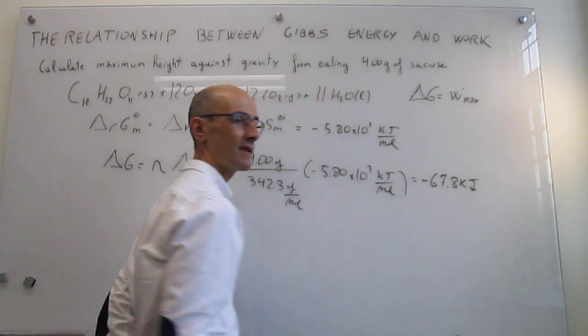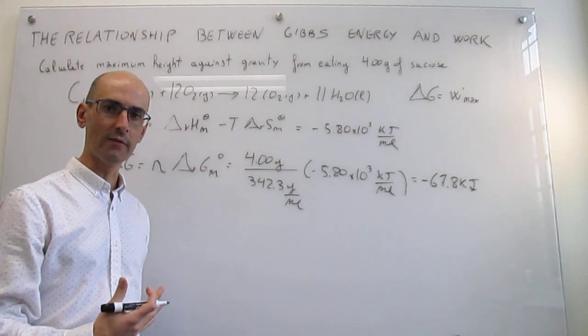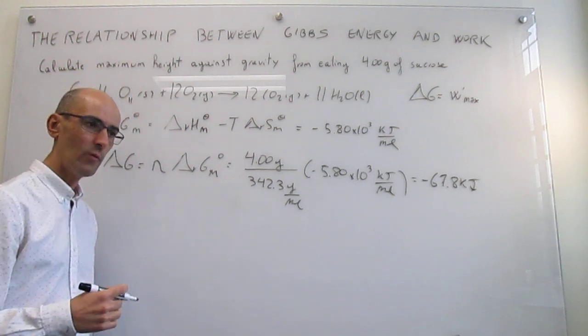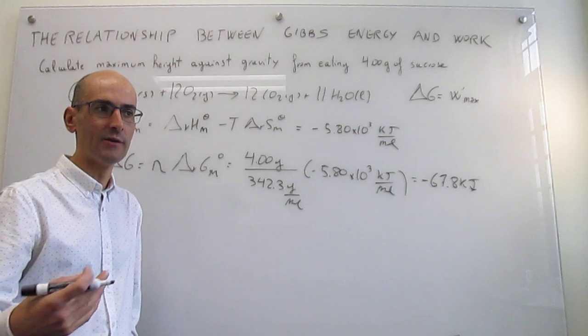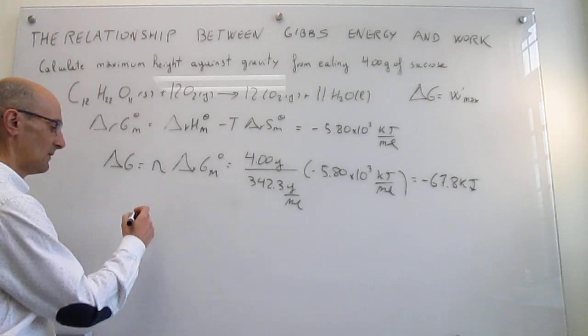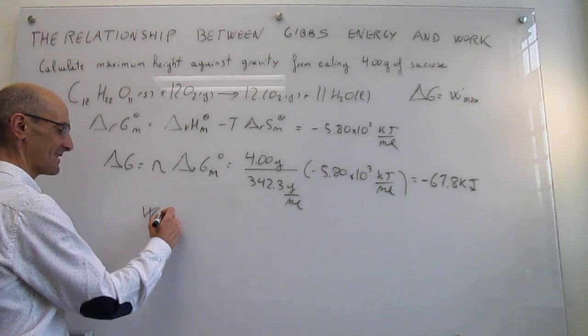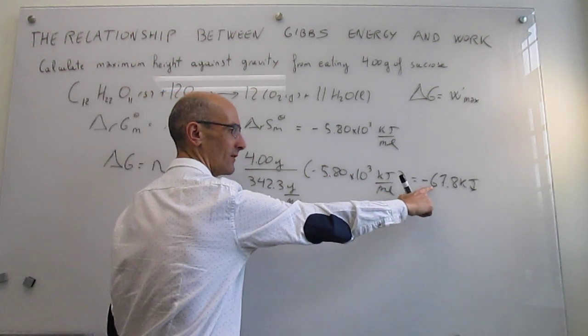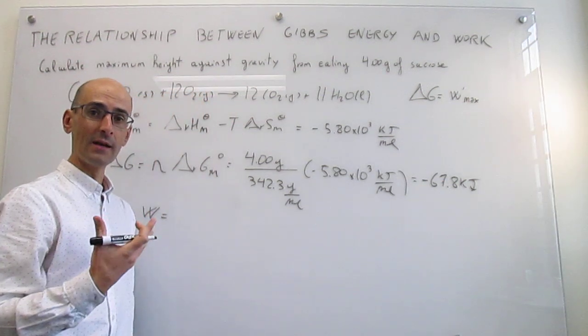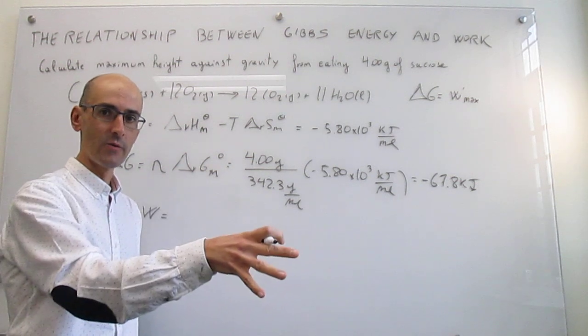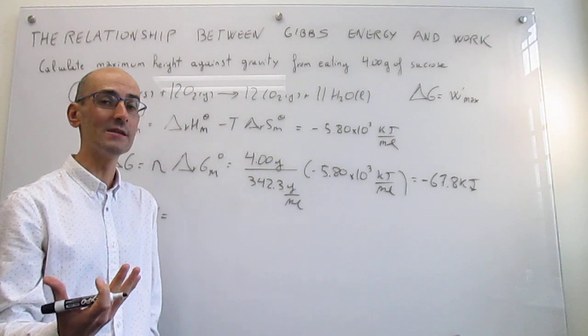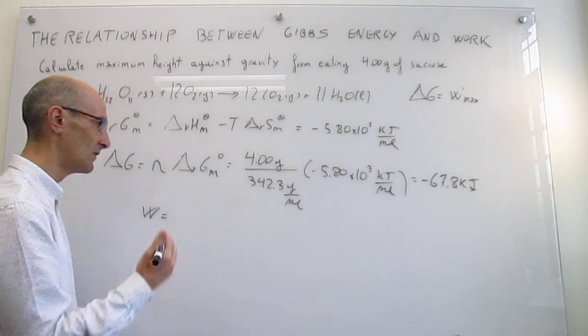That is the amount of energy as work that you can extract from the reaction. We extract that work and then we're going to assume a 100% transformation into gravitational work or work against gravity. That means that we're going to change the sign of that. This is a negative value because this is work that the system, the chemical reaction, is doing on the surroundings.